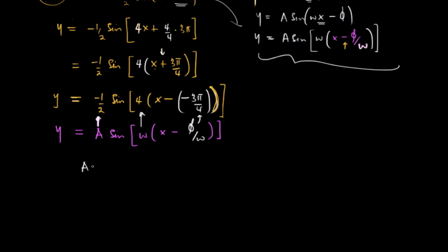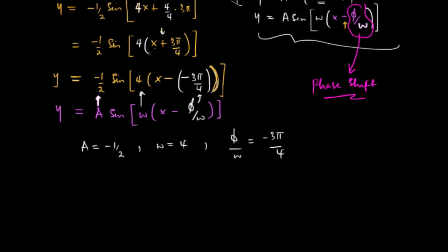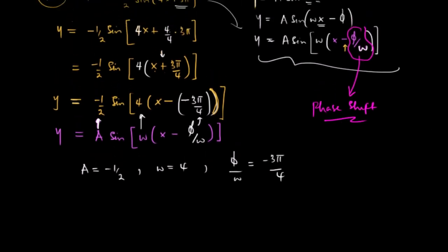So a equals negative half, omega equals 4, and phi over omega equals negative 3pi over 4. Note that phi over omega is called the phase shift. Now let's go back to the question.